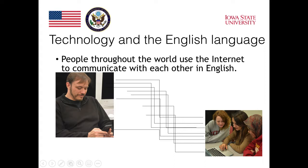With the increase in the modes of communication that technology provides, people throughout the world are able to connect using the internet, and a lot of the communication that goes on is done in English. English has become the global language — the language that many people use for communication because so many people know English. So English has a special relationship with technology because the spread of technology has also been accompanied in many cases by the spread of English, the spread of opportunities to learn English, and the spread of opportunities to communicate with a variety of different people throughout the world.